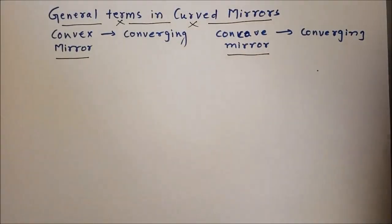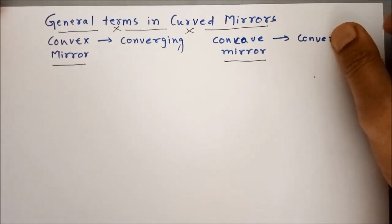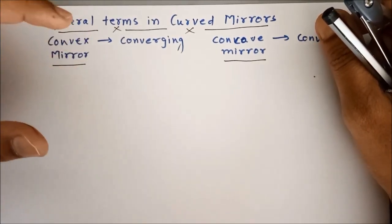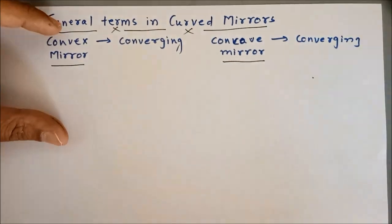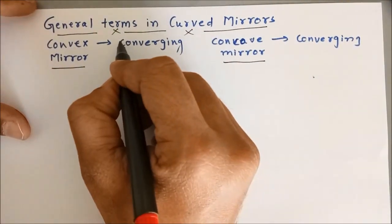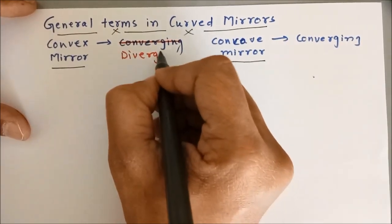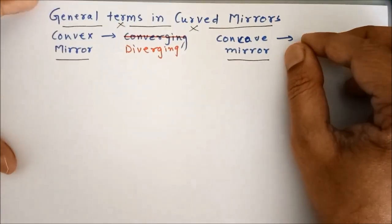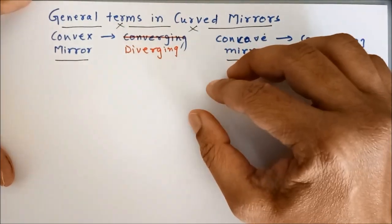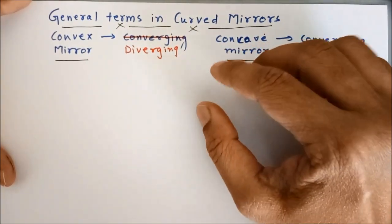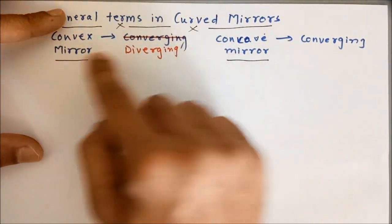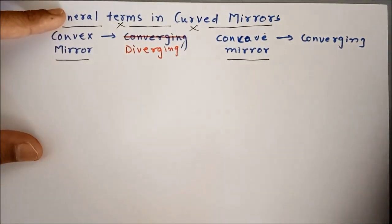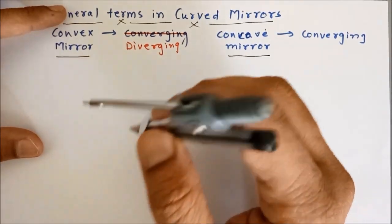Hello everyone. Today we are going to discuss some of the general terms in curved mirrors, and we will extend our understanding towards why concave mirrors are converging and why convex mirrors are diverging in nature. To understand this, we should always know where the normal is, because if you understand how to draw the normal, it becomes very easy to understand all ray diagrams.